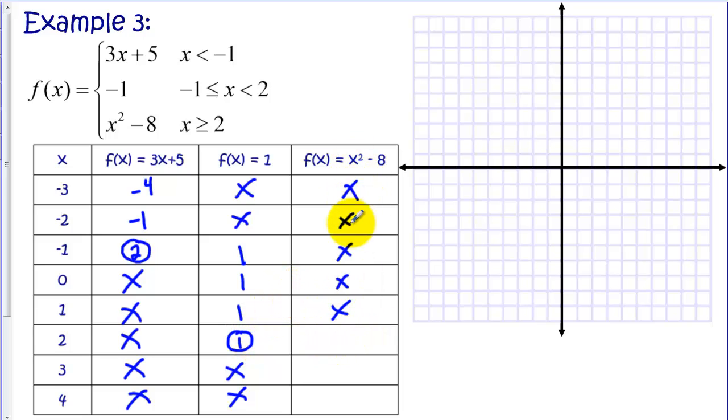And lastly, our quadratic segment, we have 2. So that's 4. 2 squared is 4. Minus 8 is -4. 3 squared minus 8, so that's 9 minus 8 is 1. And this would be 16 minus 8 would be 8.